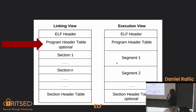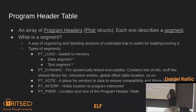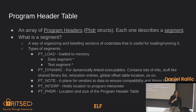Now we're going to go into the program header table. In the linking view it is optional, but it's required when you're looking from the execution perspective. The program header table is an array of program header structs, and each one describes a segment. What is a segment? It is a way of organizing and labeling sections of code or data that is useful for loading — just a labeling mechanism and a way to organize stuff. They come in different types.